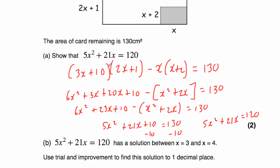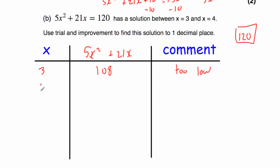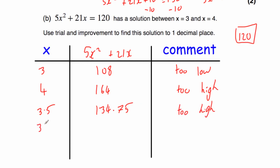Part B: 5x squared plus 21x equals 120 has a solution between x equals 3 and x equals 4. Use trial and improvement to find this solution to one decimal place. Let's try 3: 5 times 3 squared plus 21 times 3 equals 108 — too low. Let's try 4: 5 times 4 squared plus 21 times 4 equals 164 — too high. Let's try 3.5: equals 134.75 — too high. Let's try 3.3: equals 123.75 — too high.